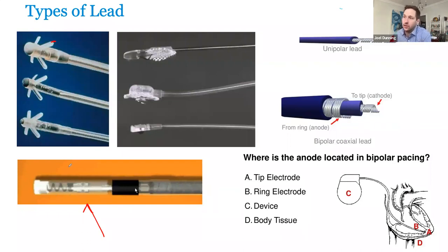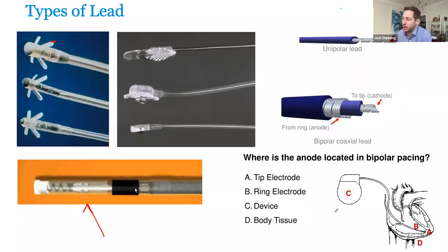The way these leads function is you have your tip electrode at the distal end, and then you have a more proximal electrode, or you use the can as your anode. Your cathode will typically be your tip, and then your anode will be the source to where the electrons flow. So you pace from the tip — the cathode, negative — and it moves to the positive. Here's your ring electrode.